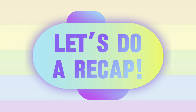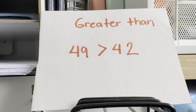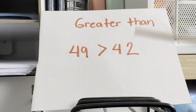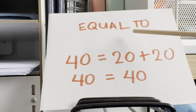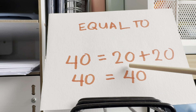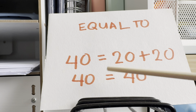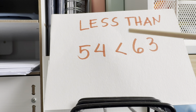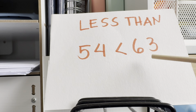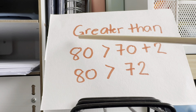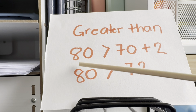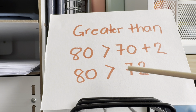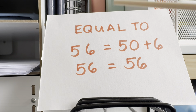Let's do a recap. Let's start. Greater than: 49 is greater than 42. Next, equal to: 40 is equals to 20 plus 20, or 40 is equals to 40. Less than: 54 is less than 63. Next example, greater than: 80 is greater than 70 plus 2, or 80 is greater than 72.